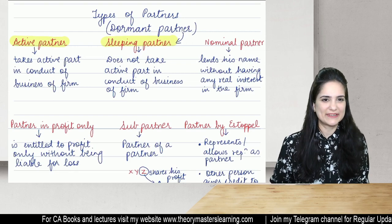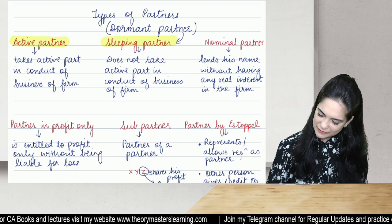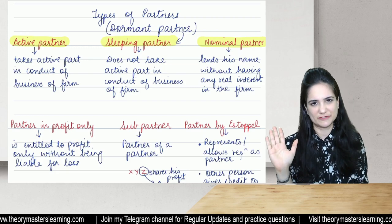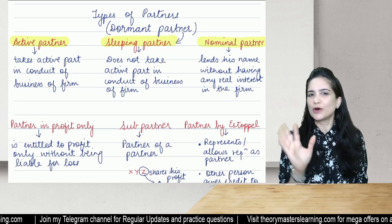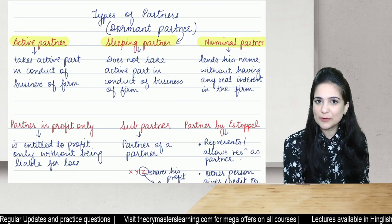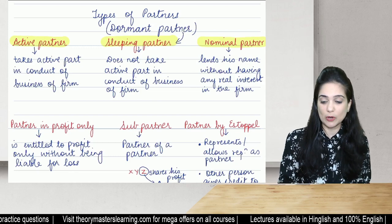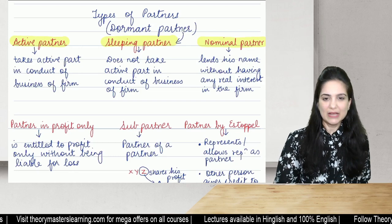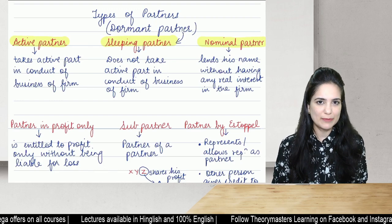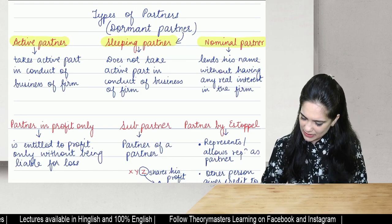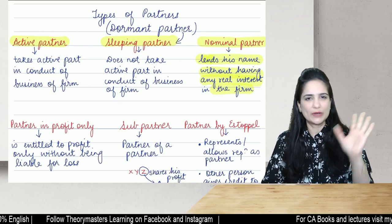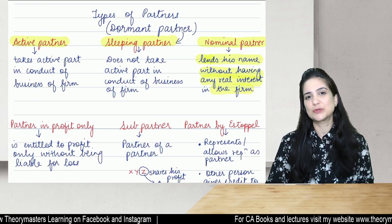A nominal partner lends his name only without having any real interest in the business. He neither contributes capital nor is entitled to any share of profit, though by agreement profit may be given to him. He is liable for acts of the firm like any other partner. He lends his name and goodwill to help get more business.